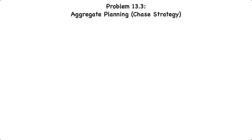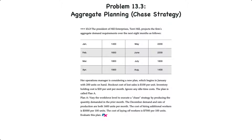In this video, we'll demonstrate how to create an aggregate production plan using a chase strategy by varying the workforce. This question corresponds to problem 13.3 in your text. The president of Hill Enterprises projects the firm's aggregate demand requirements over the next eight months from January to August, as shown in the table.